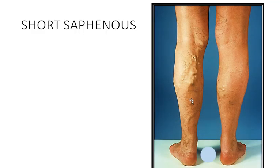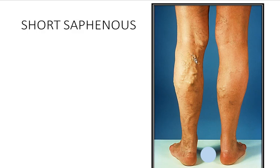This is the short saphenous varicositis and it is serpentine-like. Please notice that the short saphenous varicositis ends at the back of the knee, because at this particular site the short saphenous enters the popliteal fossa and disappears from the subcutaneous plane.